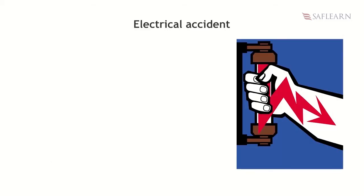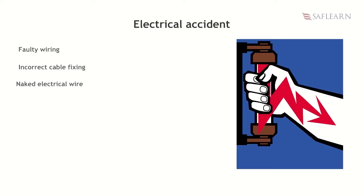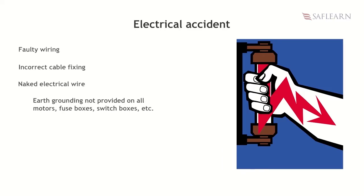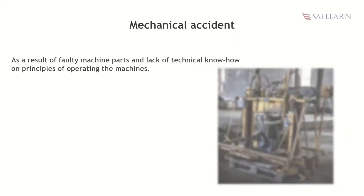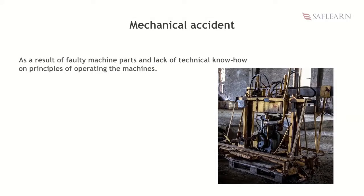Electrical accidents happen as a result of faulty wiring, incorrect cable fixing, naked electrical wires, earth grounding not provided on all motors, fuse boxes, switch boxes, etc., and overloaded sockets as a result of the use of multi-adapters. Machine accidents are basically as a result of faulty machine parts and lack of technical know-how on principles of operating the machines.